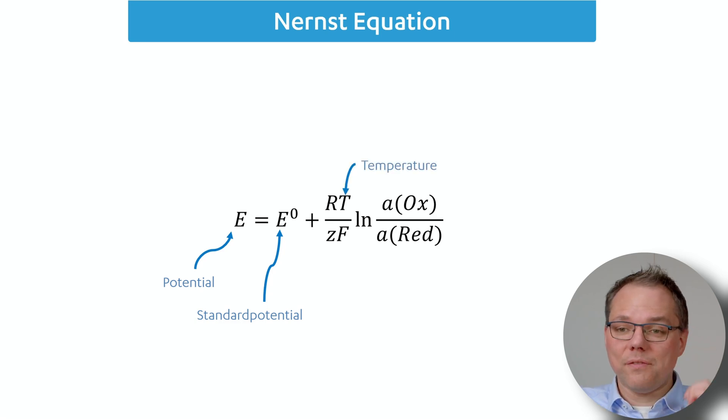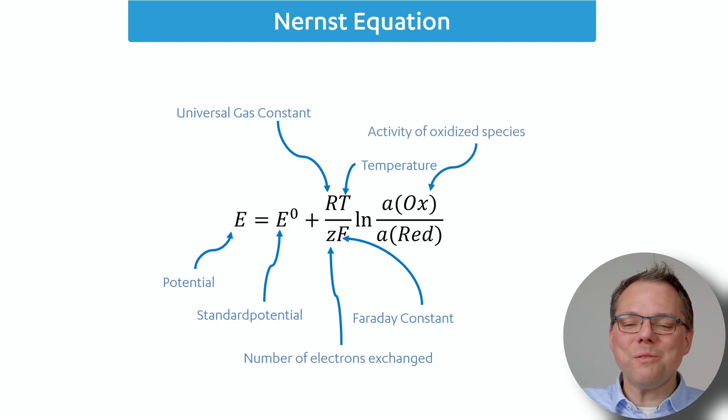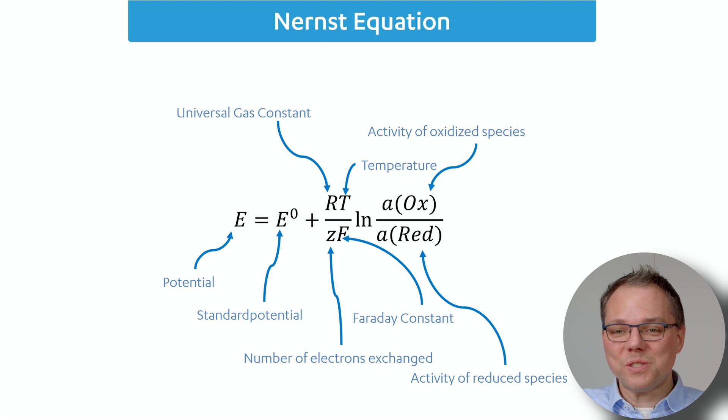Then you have the temperature, the number of electrons that are exchanged. So in your reaction if you oxidize copper to copper two, there are two electrons that you remove from the copper, so that will be a two. We have two constants here: the Faraday constant and the universal gas constant, they're always the same. Then we have the logarithm of the ratio of the activity of the oxidized species and the activity of the reduced species.